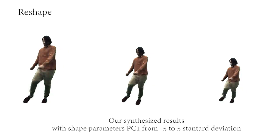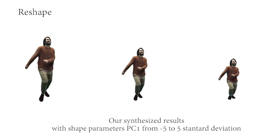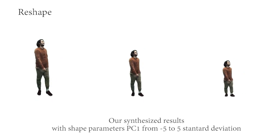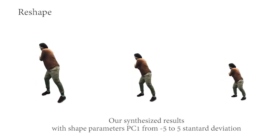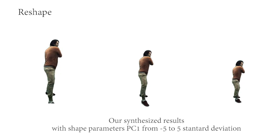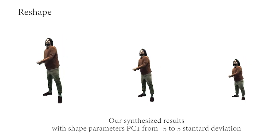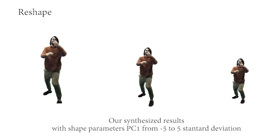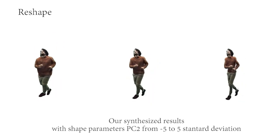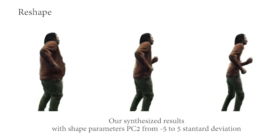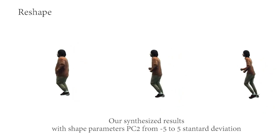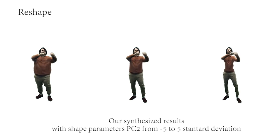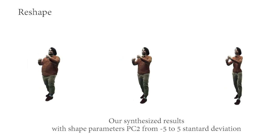Our method also supports shape control in the synthesis of human actors. As shown here, we can modify the shape parameter of the SMPL template to synthesize animations of human actors in different shapes. This technique is very useful for the film industry. For example, we are able to synthesize animations of a giant or dwarf by modifying the shape parameters of any actor, without the need of finding the actual human in that shape.